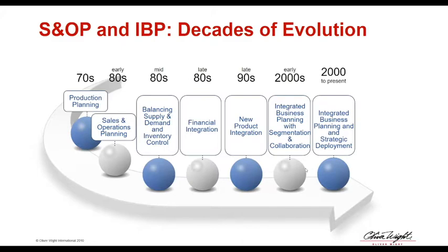It's been evolving and Oliver Wight has been at the forefront of that evolution. One of the key developments was financial integration, which should have happened in the 80s but didn't in most implementations. Without financial integration, people kept it as a volume-based process, sometimes doing a cash-up towards the end. Then new product integration came in, and Stuart and Liam led a team at Oliver Wight about 10 years ago, and they decided to officially call it Integrated Business Planning — IBP — because a number of clients were already doing it at that level.